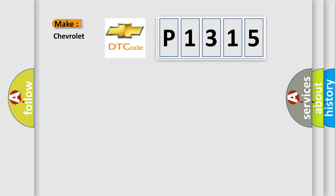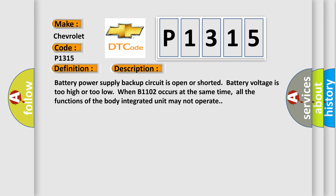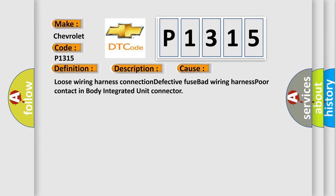What does the diagnostic trouble code P1315 interpret specifically for Chevrolet? The basic definition is BAT-P or supply malfunction. The battery power supply backup circuit is open or shorted, or battery voltage is too high or too low. When B1102 occurs at the same time, all functions of the body integrated unit may not operate. This diagnostic error occurs most often in these cases: loose wiring harness connection, defective fuse, bad wiring harness, or poor contact in the body integrated unit connector.